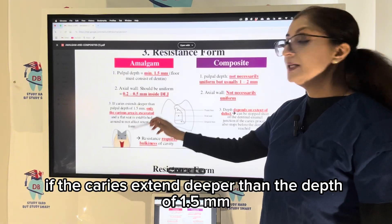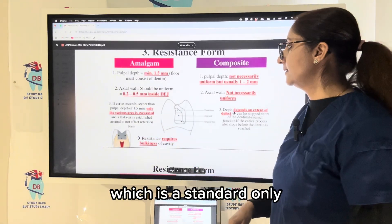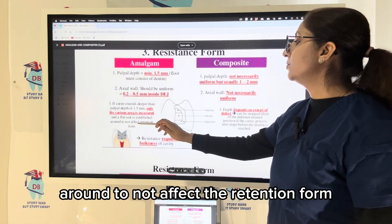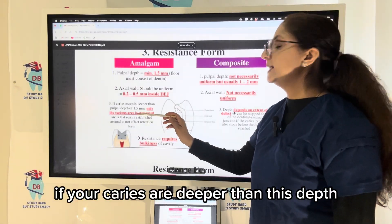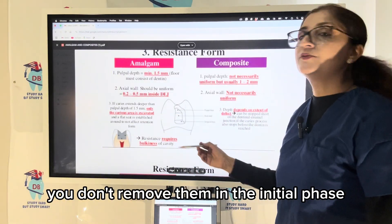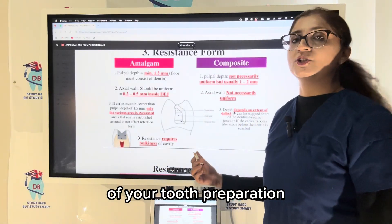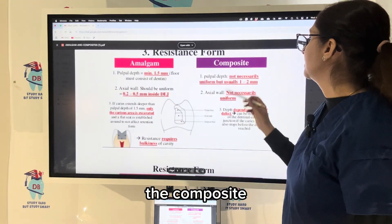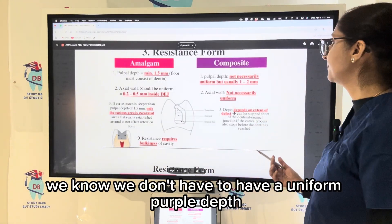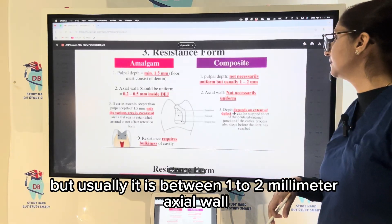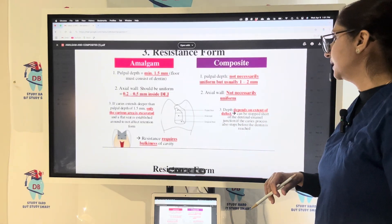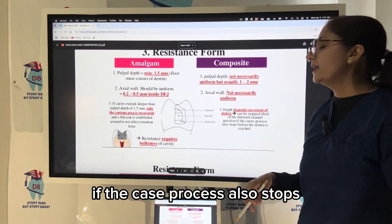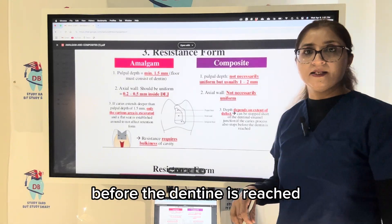If caries extend deeper than the standard 1.5 mm depth, only the carious area is excavated and a flat seat is established around it so as not to affect the retention form. If caries are deeper than this depth, you don't remove them in the initial phase — you come back later to remove deeper caries in the final tooth preparation stage. For composite, there is no need for uniform pulpal depth; it is usually between 1 to 2 mm. The axial wall also does not need a uniform depth — it depends upon the extent of the defect.